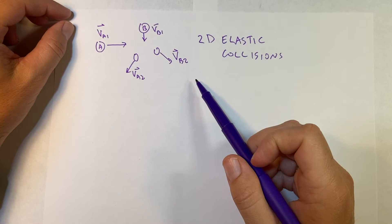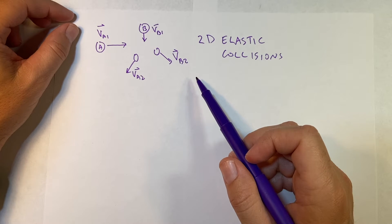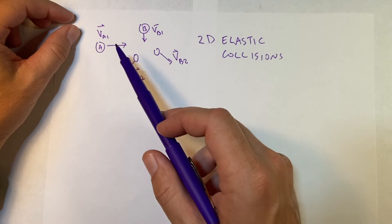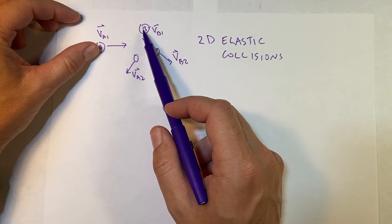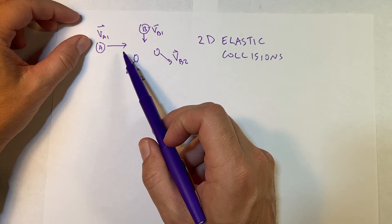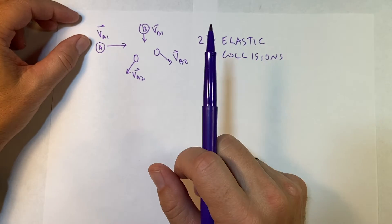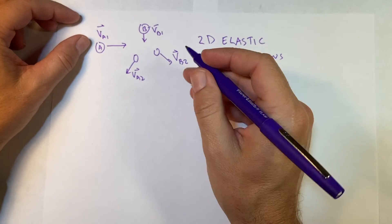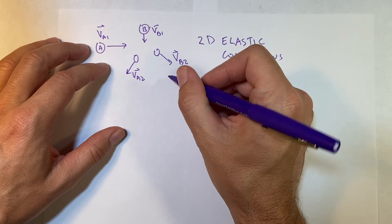In the previous video I did a one-dimensional elastic collision with a special case where one of the masses was at rest, and it was tough. Now imagine what would happen if you have two objects both moving in two dimensions with an elastic collision. It is solvable but I'm not going to solve it — let's set it up. The first thing I would say is momentum is conserved because there's no net external force.